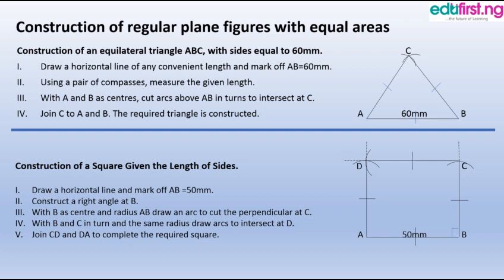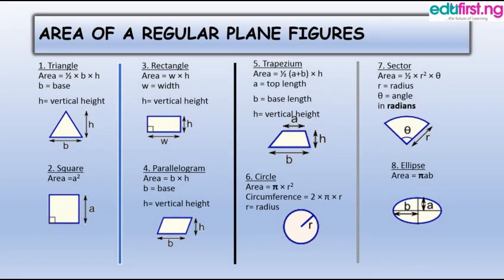We can also do that for our regular polygon hexagon and likewise our circle, which is very simple. Let's look at the areas of regular plane figures. One, the area of a triangle is half base times height, where B is the base and H is the vertical height. Two, the area of a square is A squared, meaning all sides are equal. Three, the area of a rectangle is width times height, where W is the width and H is the vertical height. Four, the area of a parallelogram is B times H, where B is the base and H is the height.